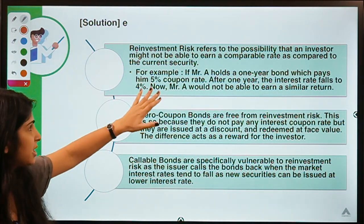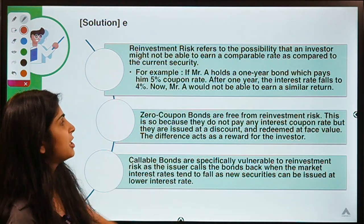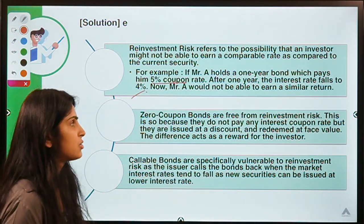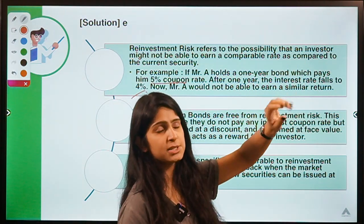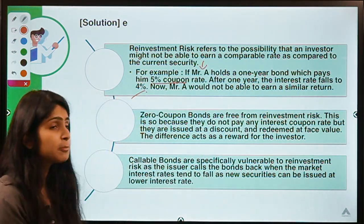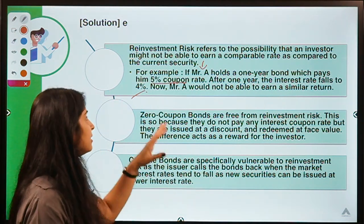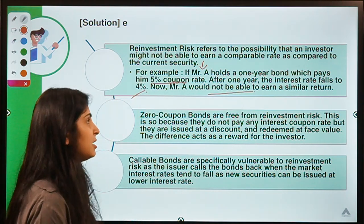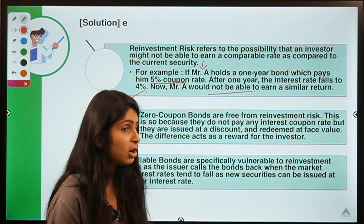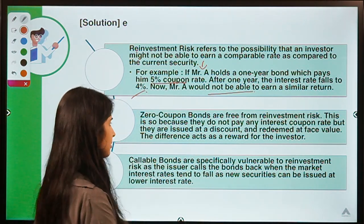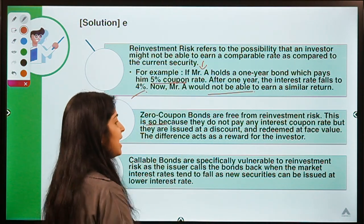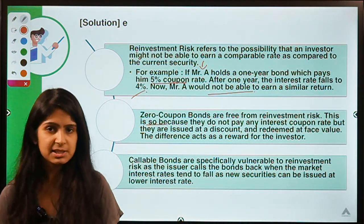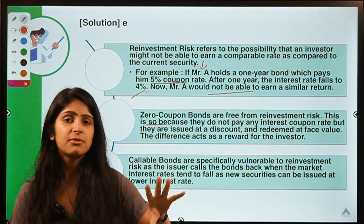Here is an example: A holds a one-year bond paying a 5% coupon rate. After one year, market interest rates fall to 4%. The bond expires and money returns to Mr. A, but since the market interest rate has fallen, he is not able to get a comparable rate of interest — A would not be able to earn a similar return. That is reinvestment risk. Zero coupon bonds are free from it because they do not pay any interest rate and are redeemed at face value.